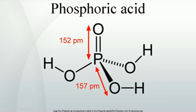Pure anhydrous phosphoric acid is a white solid that melts at 42.35°C to form a colorless, viscous liquid. Orthophosphoric acid is the IUPAC name for this compound. The prefix 'ortho' is used to distinguish the acid from related phosphoric acids called polyphosphoric acids. Orthophosphoric acid is a non-toxic, inorganic, rather weak triprotic acid, which when pure is a solid at room temperature and pressure. Orthophosphoric acid is a very polar molecule; therefore it is highly soluble in water.